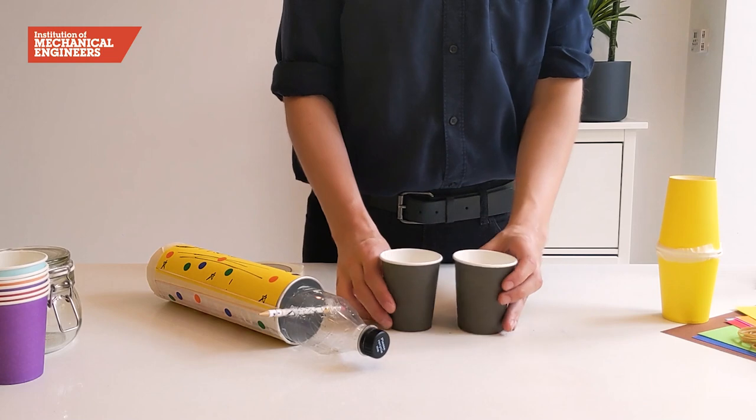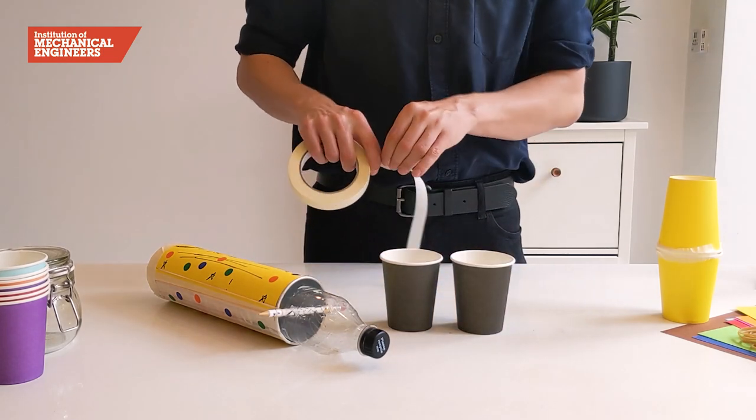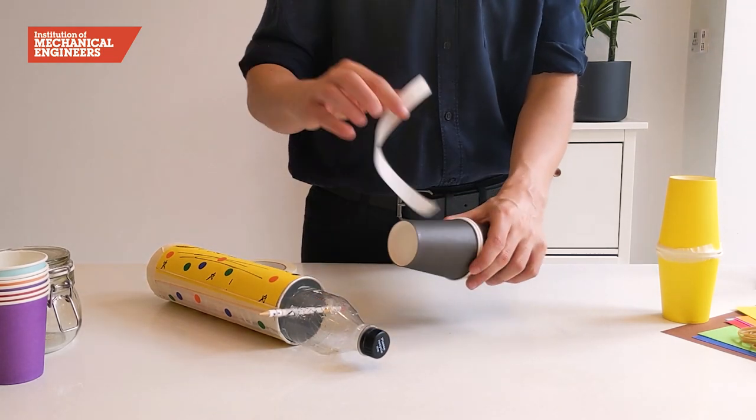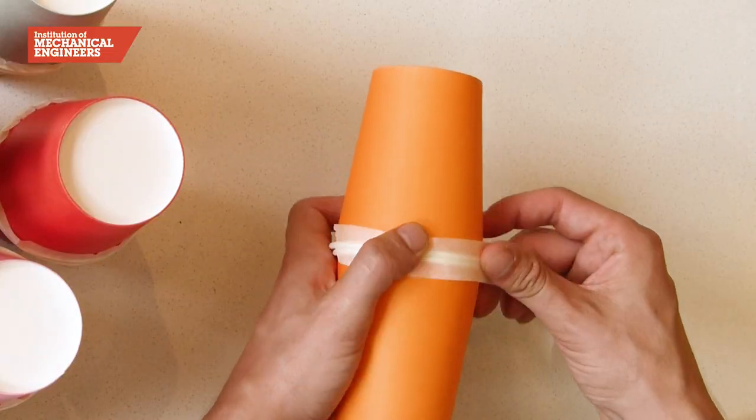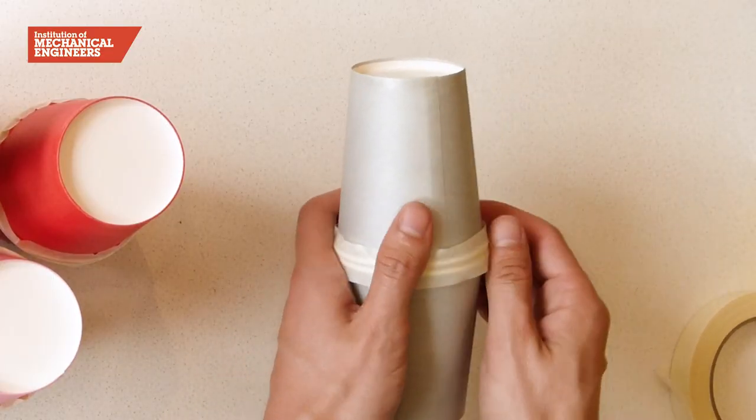Now that you've got your cork launcher, we need to make the pins. To create a pin, you'll need two paper cups. Using tape, secure the paper cups together around the widest part. You'll have something that looks a bit like this.